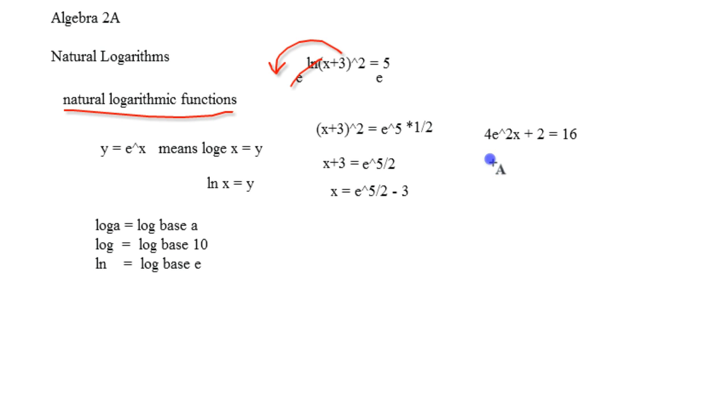Now for this equation, you're just going to want to solve it simple, so this will become 4e to the 2x equals 14, because I'm minus 2 from both sides, and then I'm going to divide by 4, and that leaves me with e to the 2x equals 3.5, something as simple as that.